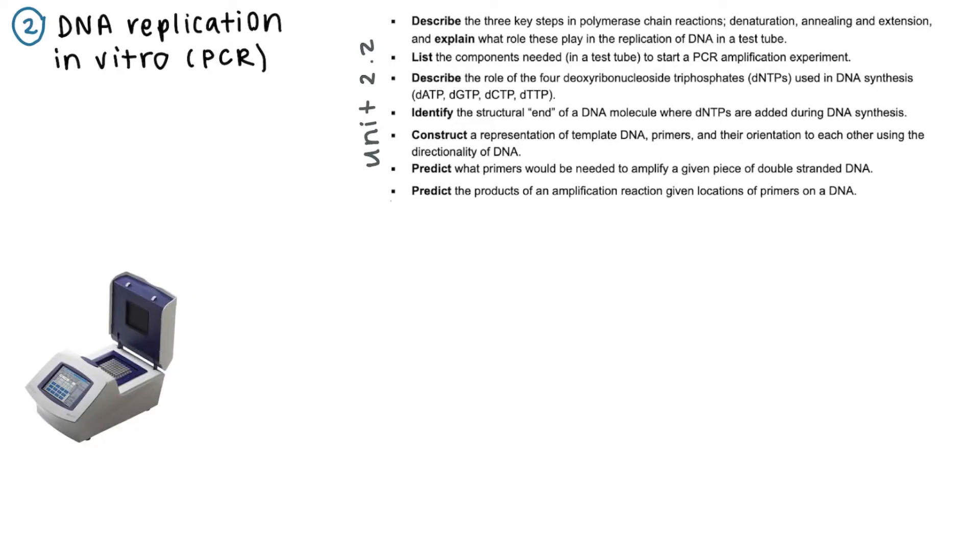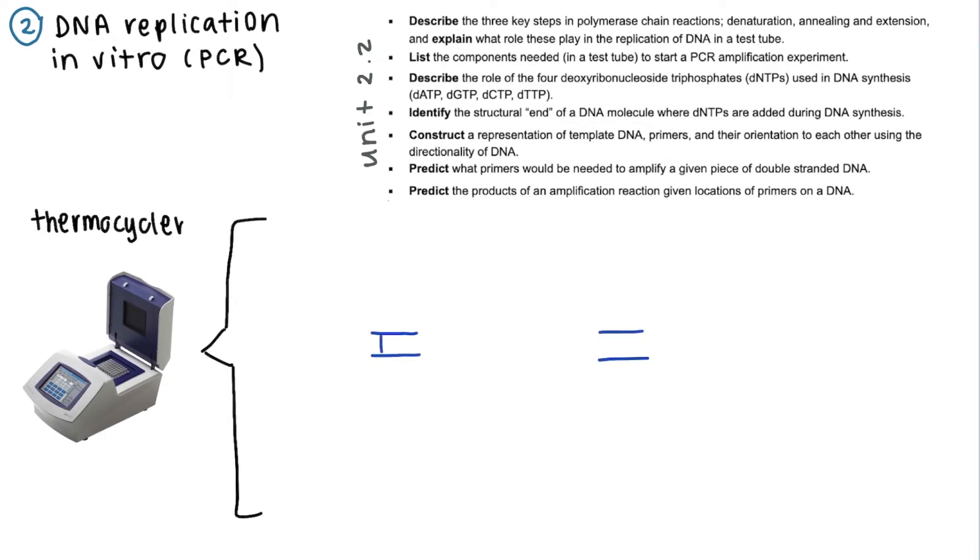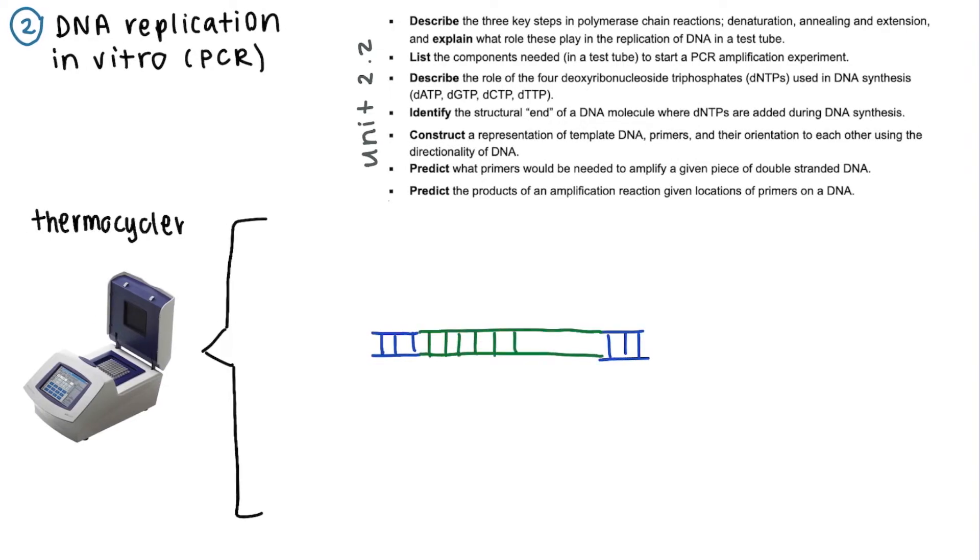And they're all the ones in Unit 2.2. The objective of PCR is basically to replicate in a laboratory setting what occurs in a cell in DNA replication, but do it much faster so that it can be used to amplify a specific sequence.